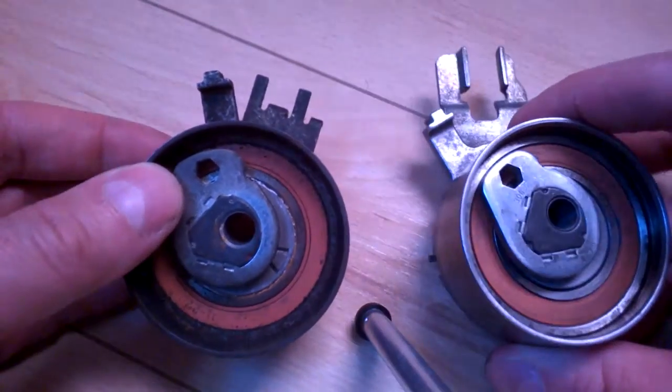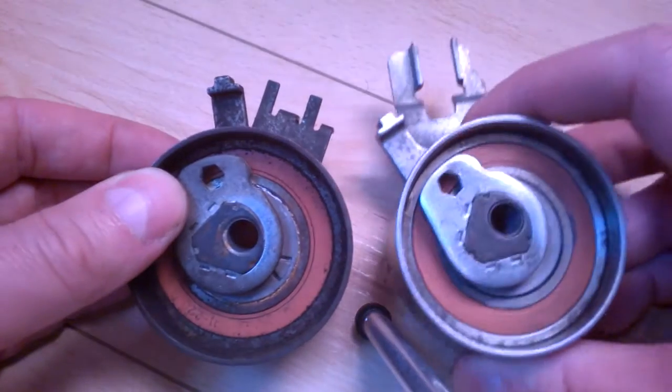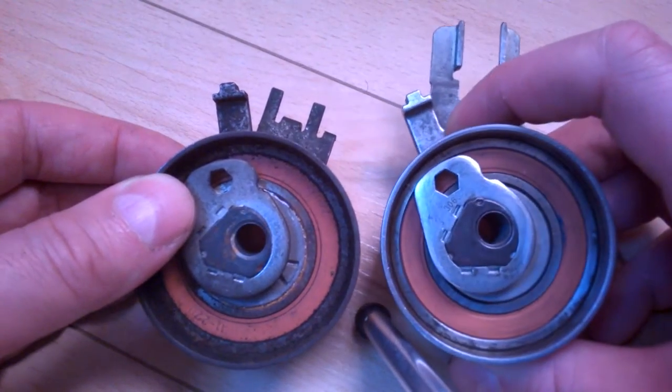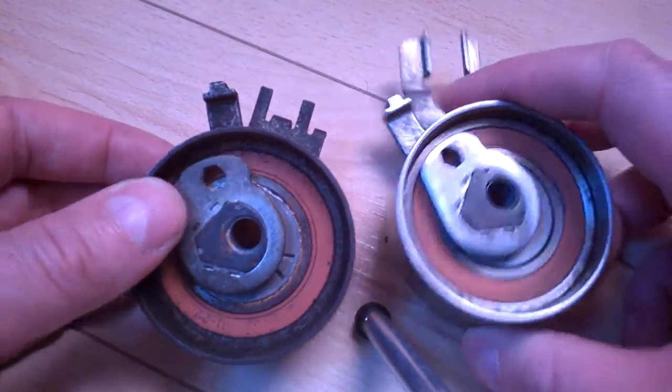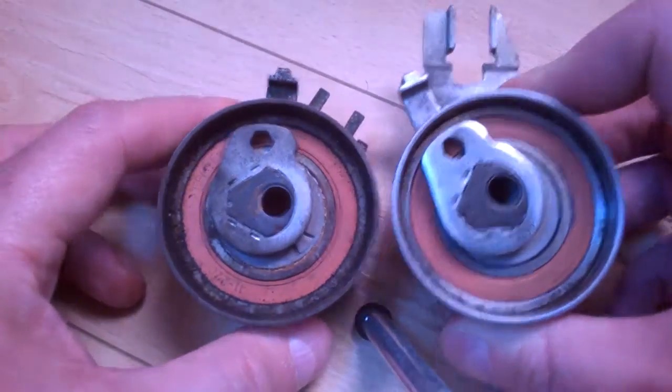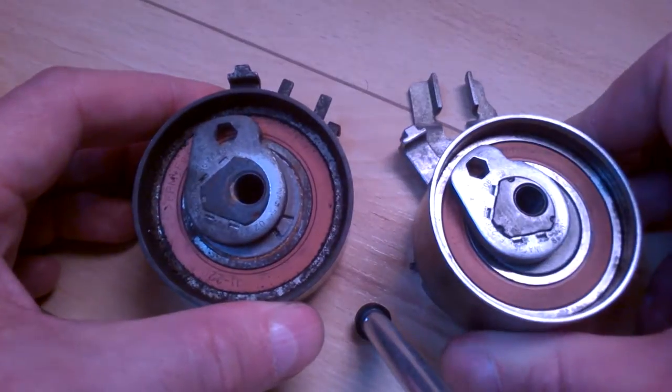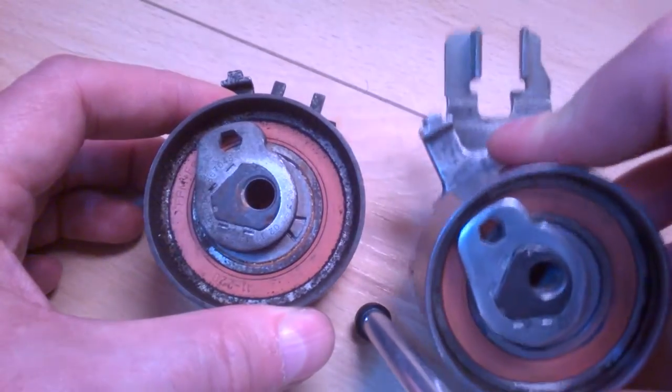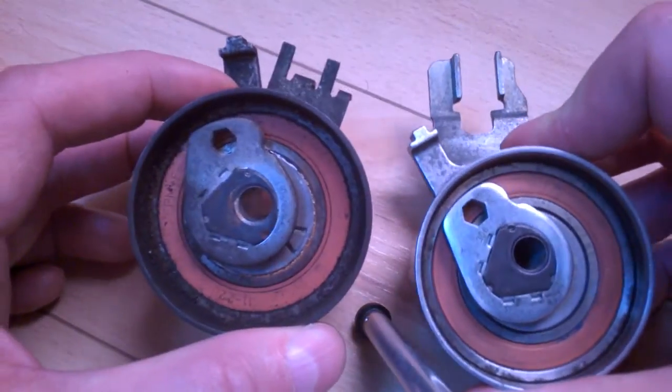You may even have the wrong tensioner already on your car if the previous owner changed it and didn't install the right one. When ordering, there are several part numbers for each of these. Just make sure you have the right engine block that fits with the right part.